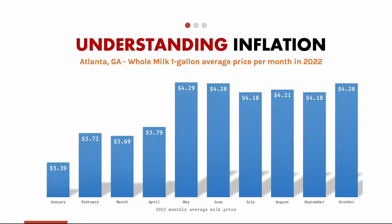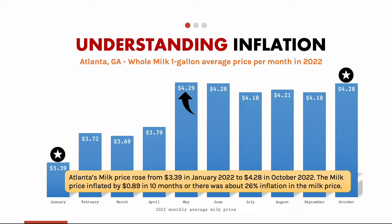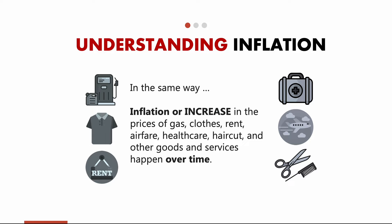As we can see, the milk prices were the highest in May 2022. Comparing January to October, Atlanta's milk price rose from $3.39 to $4.28 — that means milk price inflated by $0.89 in 10 months, or about 26% inflation. In the same way, we'll see increases in price or inflation for gas, clothes, rent, airfare, and other goods and services over time.